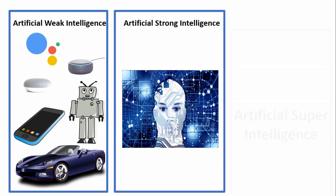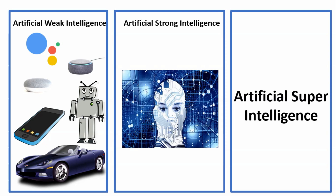Moving on to artificial super intelligence — this refers to the time when the capabilities of computers will surpass those of human beings. It will take a while to achieve artificial super intelligence; presently it is seen as a hypothetical situation as depicted in movies and science fiction. To summarize, narrow intelligence is the only thing that exists for now — all major AI technologies are artificial narrow intelligence, and we don't have machines capable of thinking like human beings.